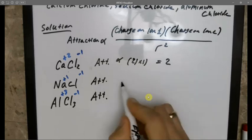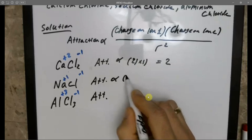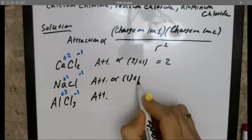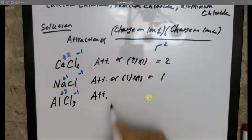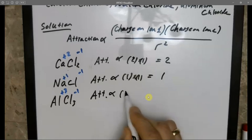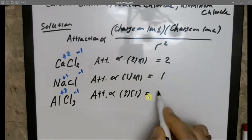There's no units because it's just proportionality. Here it's 1 times 1, and the answer here is 1. And here it is 3 times 1, and the answer here would be 3.